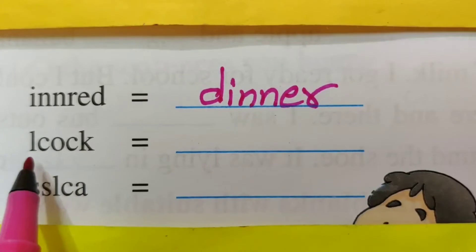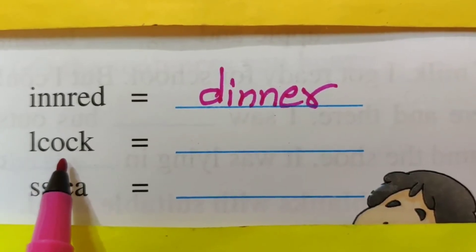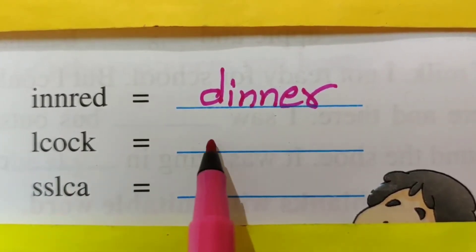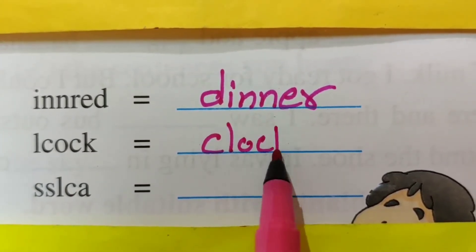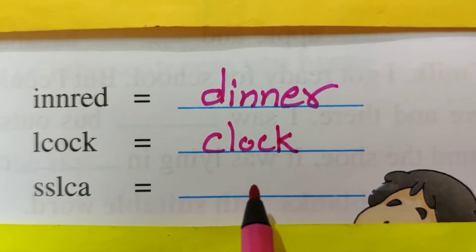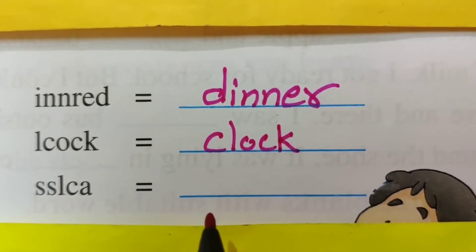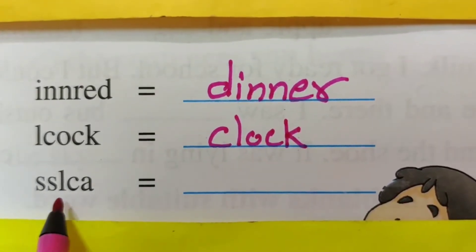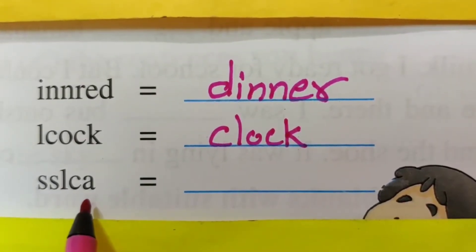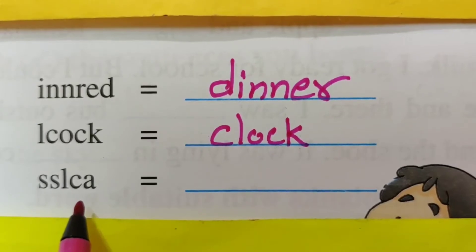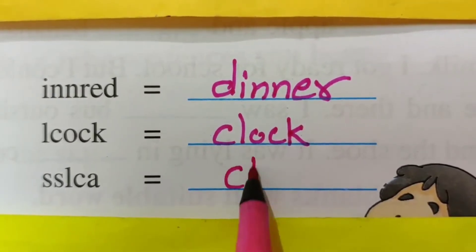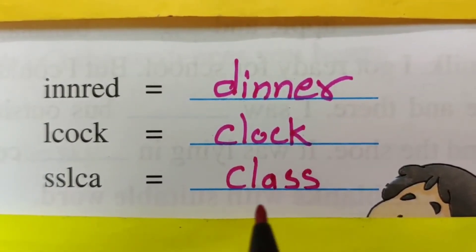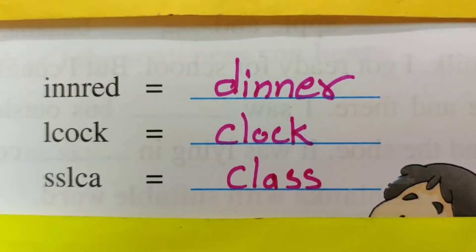How to write the next word? The answer is D-I-N-N-E-R — dinner. Then C-L-O-C-K — clock. And S-S-L-C-A — the correct spelling is C-L-A-S-S — class. Like that you have to write down children.